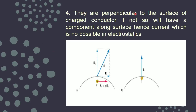Electric field lines are perpendicular to the surface of the conductor. If they were not perpendicular but making some angle, there would be a component along the surface, and due to that component charges would start moving — meaning current. But we are talking about electrostatics, so in electrostatics the electric field is always perpendicular to the surface of the conductor.